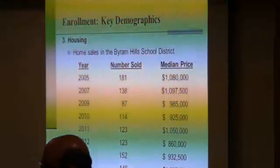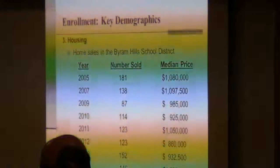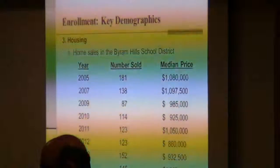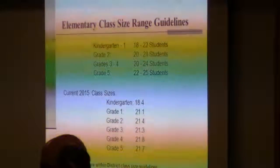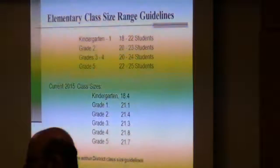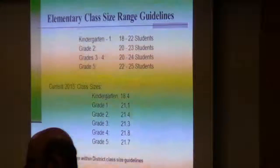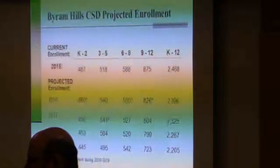One of the most interesting things is how many houses are sold and what the prices are — the number is particularly important to the district. In 2005 we reached a peak at the heat of the housing market. By 2009 it had dropped off considerably. By 2013 it had built back up, and based on 2014 numbers, the number has stabilized, which is positive for us — a stable population is certainly easier to plan for. Our class size guidelines range from 18-22 students in kindergarten to 22-25 in grade 5, and all our classes are at the low end.